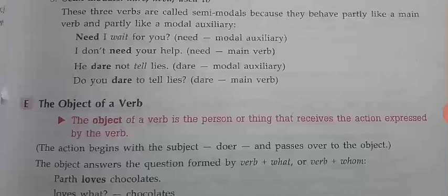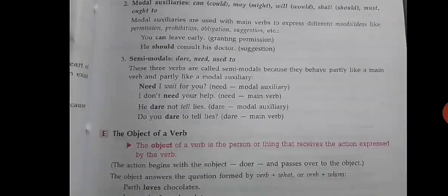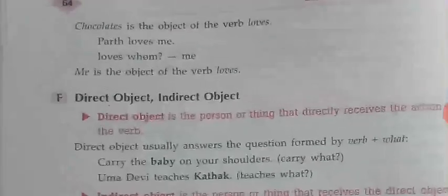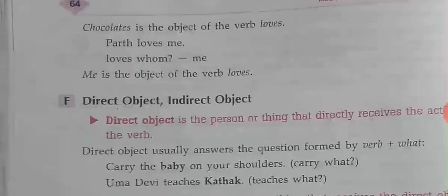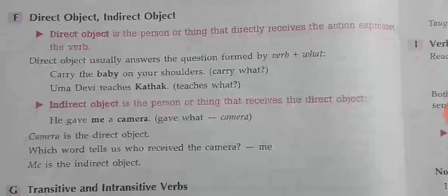For example: 'Parth loves chocolates.' Parth is the subject, 'loves' is the verb — loves what? Chocolates. So chocolates is the object of the verb 'loves'. Similarly, 'loves me' — loves whom? Me. So 'me' is the object of the verb 'loves'.